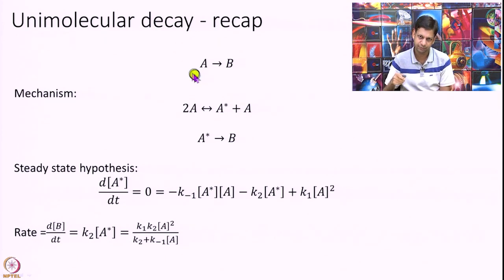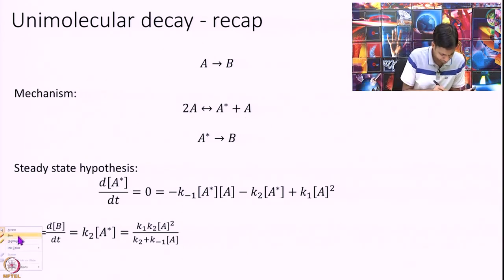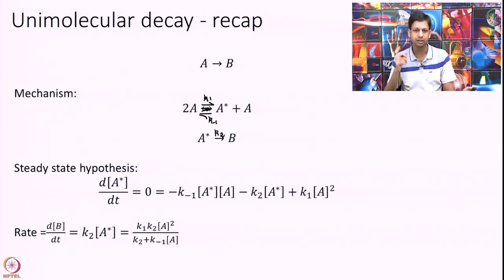One mechanism that was proposed, and that is what we discussed in our earlier modules, is that rather than A directly going to B, which actually does not match experiment at all, what was proposed is that two molecules of A collide with each other to give you A* plus A. This is really equilibrium, K1 and K minus 1, and A* finally decomposes to give you B. That is our mechanism.